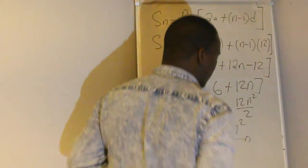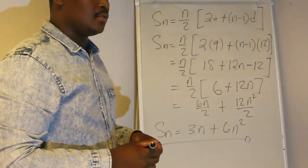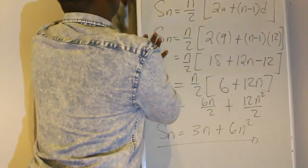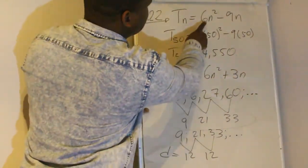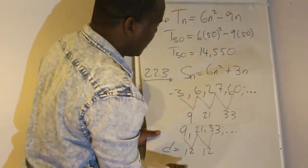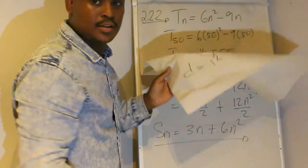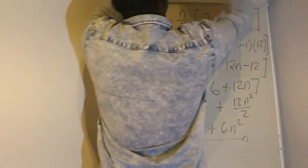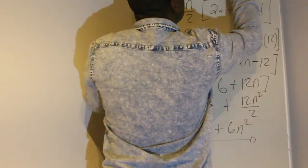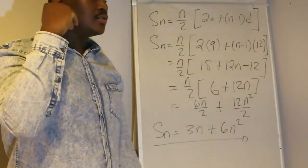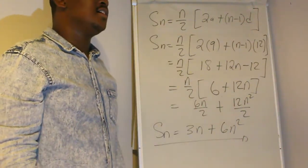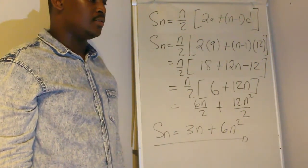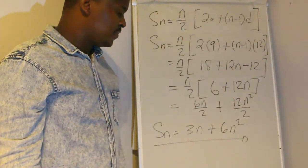So if you want to find the sum of that first difference sequence, this is the equation you should use. Let's see if it's the same as the one they gave us: the given sum is 6n squared plus 3n, and we have 3n plus 6n squared — this is the same equation. That's what they want you to show. It's more like they wanted you to find the sum of that arithmetic sequence, which is the first difference of a quadratic equation.